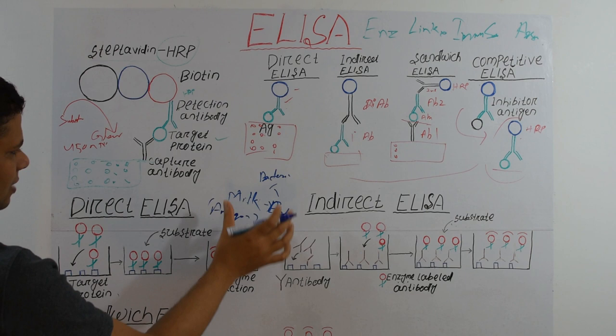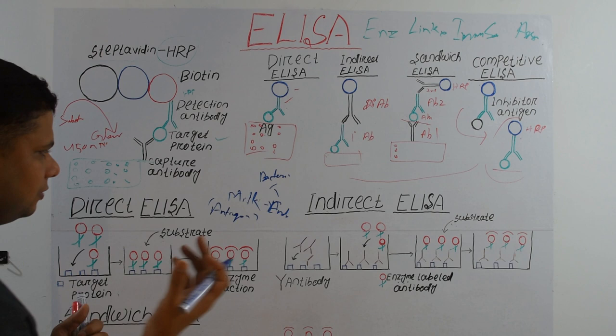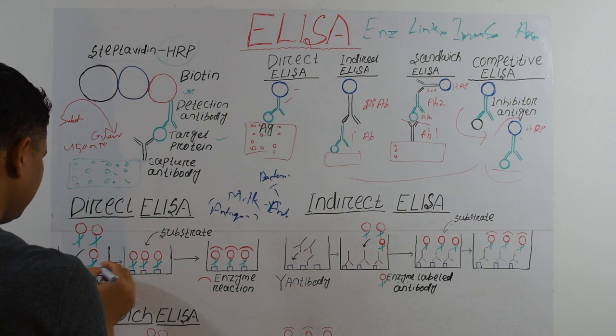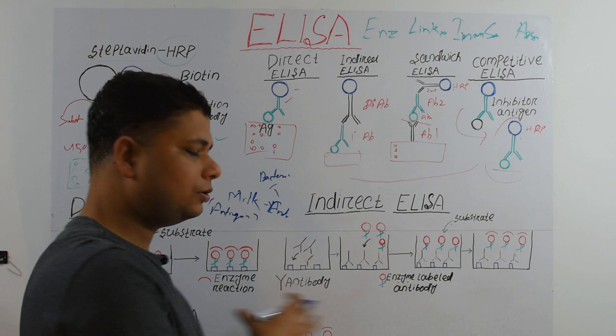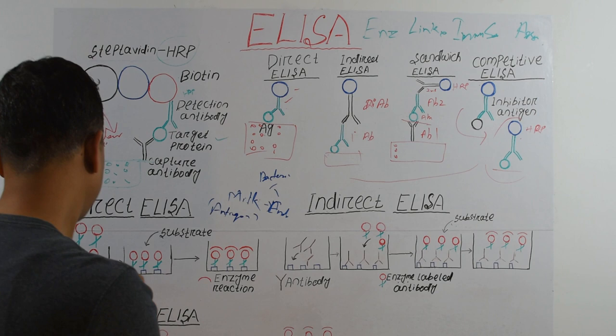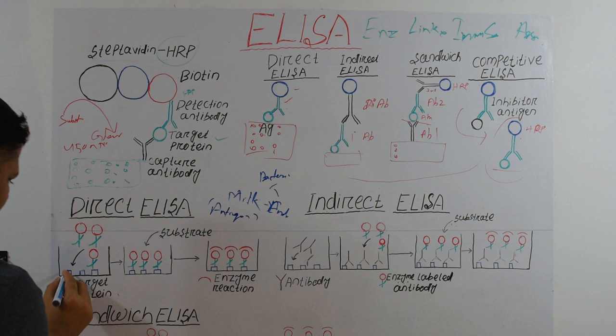We keep the milk containing endotoxin in the 96-well plate at around 37 degrees for one day, then wash it. We wash to remove all unbound or non-specific proteins to reduce the background. After fixing the antigen to the well, we add our antibody conjugated with HRP.